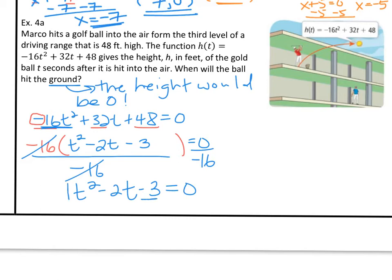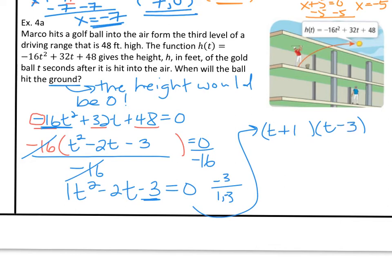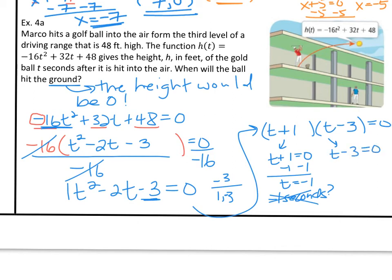Now with a equal to 1, we just need to split c. For negative 3, we can only use 1 and 3. We want negative 2 in the middle, so we make the 3 negative — when we multiply we get negative 3, and when we add we get negative 2 for b. Factoring gives us t plus 1 times t minus 3. Applying the zero product property: the first parenthesis gives t equals negative 1 second, which doesn't make sense for time. The second gives t equals 3. So in 3 seconds, the ball will land on the ground.